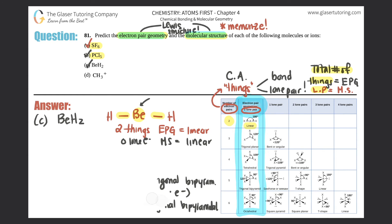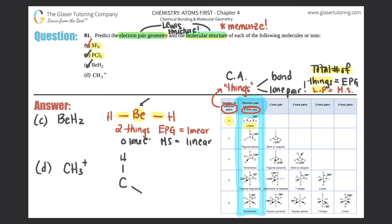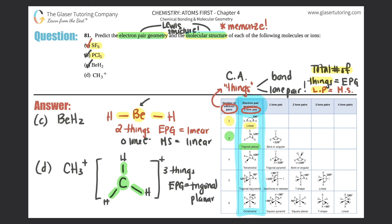Part (d): CH3 with a positive charge. The Lewis structure is carbon surrounded by three hydrogens — bracketed with a plus sign and no lone pairs on carbon. How many total things around the central atom carbon? One, two, three — three total things. Three gives us trigonal planar for the electron pair geometry. Carbon has zero lone pairs, so the molecular structure is also trigonal planar.